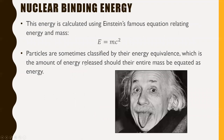This energy is calculated using Einstein's famous equation relating energy and mass: E equals MC squared. If you have something of a certain mass, you can find its energy equivalence using this equation. Particles are sometimes classified by their energy equivalence — the amount of energy released should their entire mass be converted to energy. If you had some way of turning the mass of an entire particle into raw energy, that's where E equals MC squared comes into play.